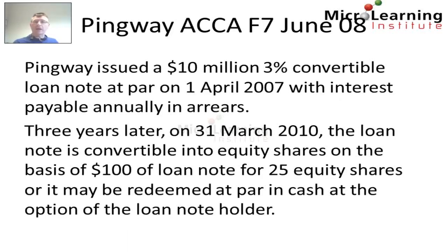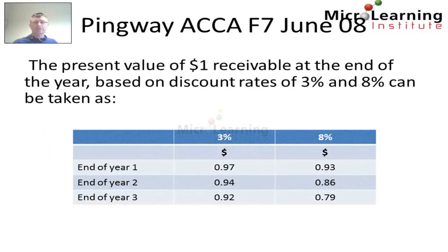PainWay issued a $10 million 3% convertible loan note at par on the 1st of April 2007, with interest payable annually in arrears. Three years later, on the 31st of March 2010, the loan note is convertible into equity shares on the basis of $100 of loan note for 25 equity shares, or it may be redeemed at par in cash at the option of the loan holder. We're also told that the present value of $1 receivable at the end of the year based on discount rates of both 3% and 8% can be taken as displayed in the following table.